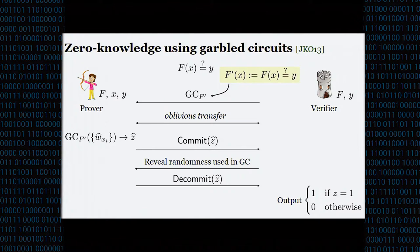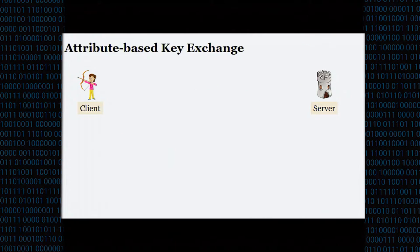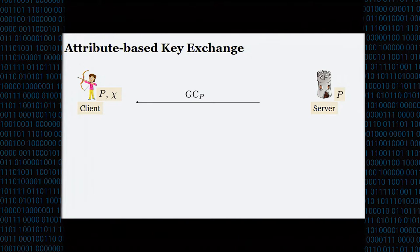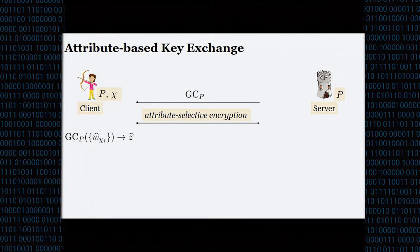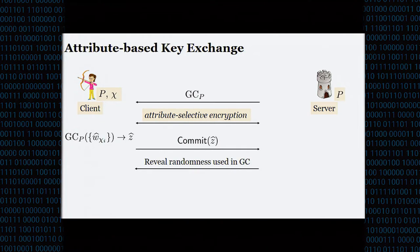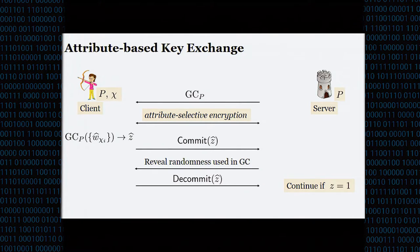Now let's adapt this protocol to the attribute-based key exchange setting. We map the prover to the client and the verifier to the server. They both have policy P, and the client additionally has its attribute vector. The server sends a garbling of the policy. We then run attribute-selective encryption — viewable as a magic box — that outputs the appropriate input wire labels for the client's attribute vector. The client evaluates the garbled circuit, commits to the wire label, the server reveals the randomness, the client checks correctness and decommits. Instead of the server simply outputting a value, it checks this is the one bit, and if so, the parties do coin tossing to derive a shared key.